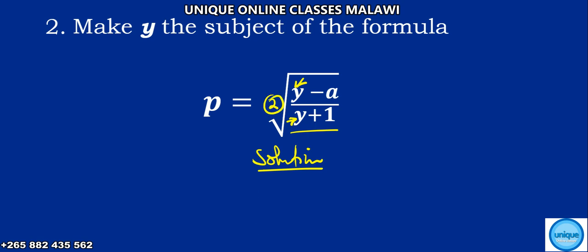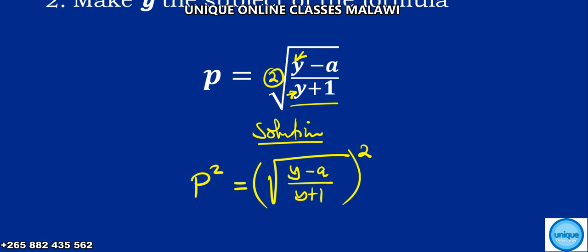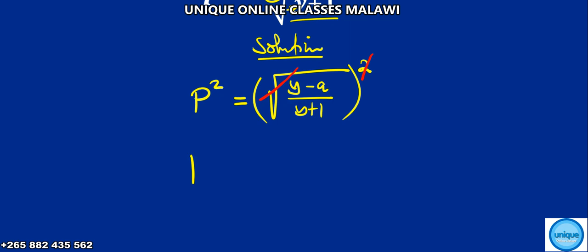The squaring cancels the square root on the right-hand side. So we're going to have P squared is equal to y minus a over y plus 1. The square root and the square cancel, meaning P squared is equal to y minus a divided by y plus 1.